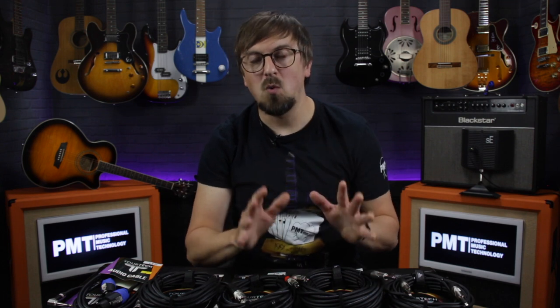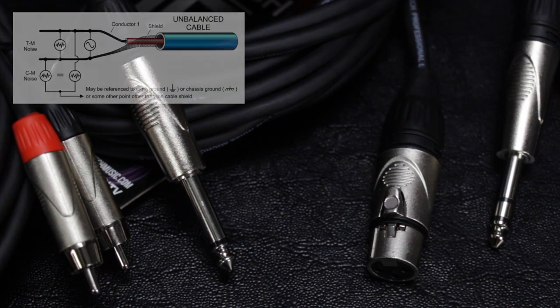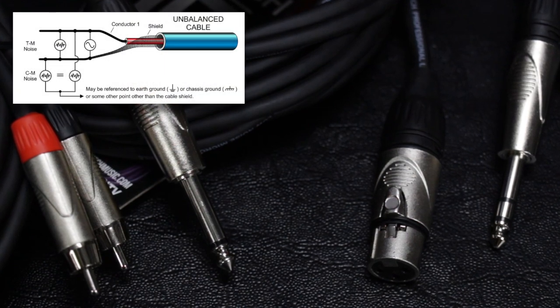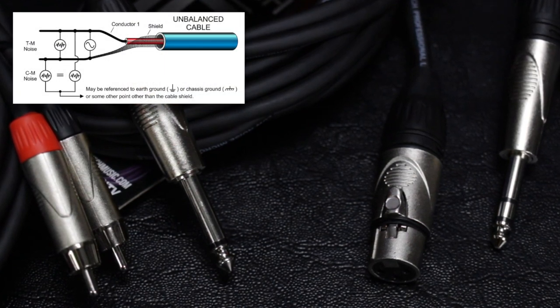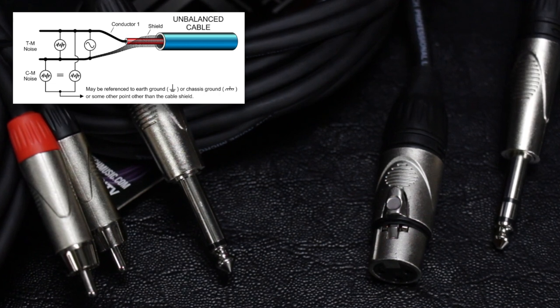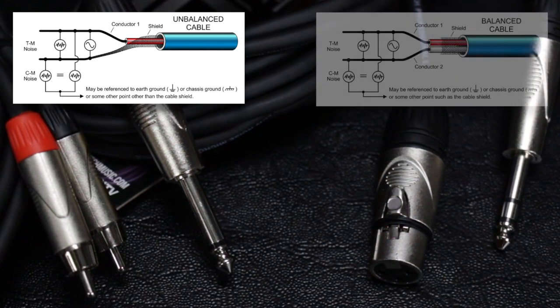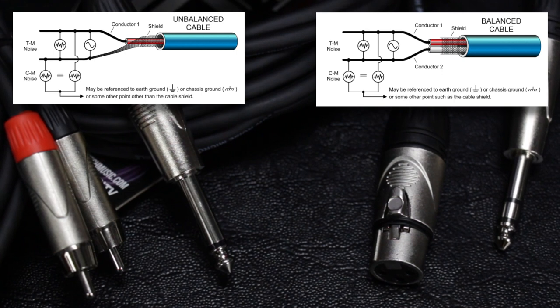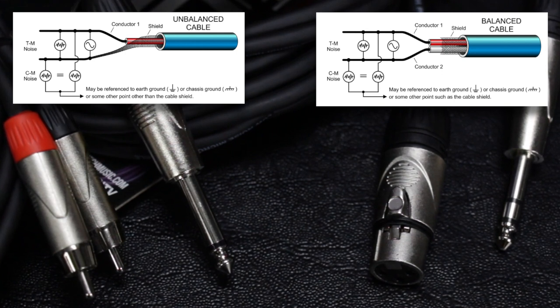Just before we get started, a quick bit of jargon busting. Throughout the video I'll be using the terms balanced and unbalanced. Unbalanced connectors send their signal over two-core cable and this is commonly used for the likes of guitars and line level outputs such as keyboards and DJ mixers, whereas a balanced connector utilizes three-core cable and they're more commonly used for microphones, PA and studio gear.